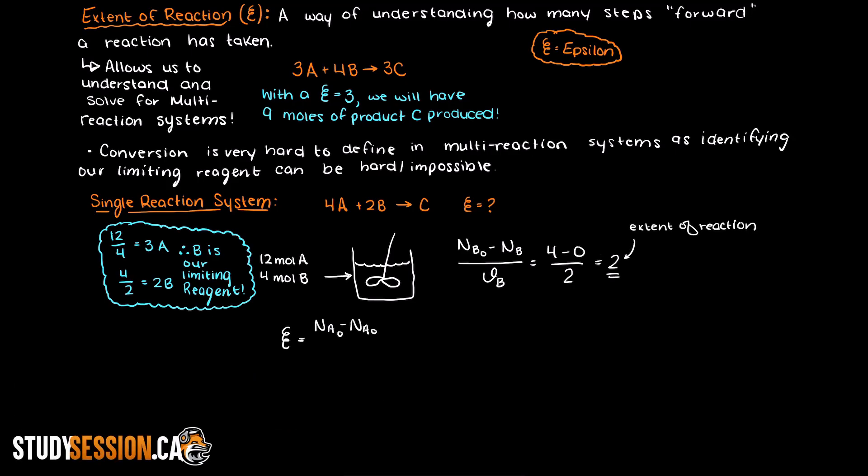Now we can also use this extent of reaction to solve for the amounts of our other components involved in the reaction as well. So we write out the equation which I presented earlier and apply our extent of reaction and solve for the amount of A and C at the end of our reaction. Therefore when the reaction is completed we will be left with 2 moles of A and 2 moles of our product C.